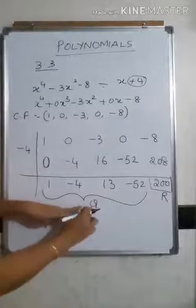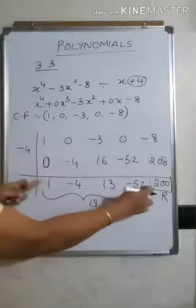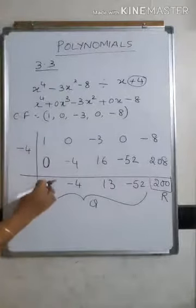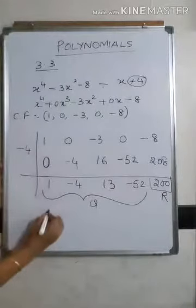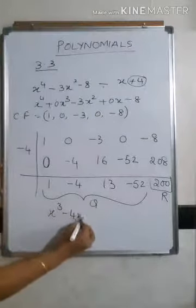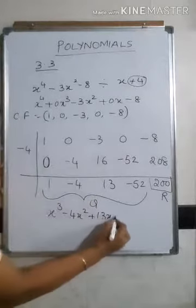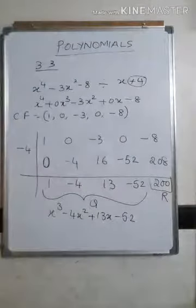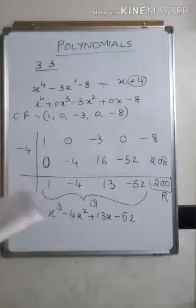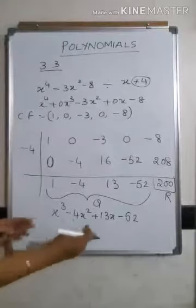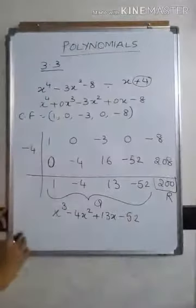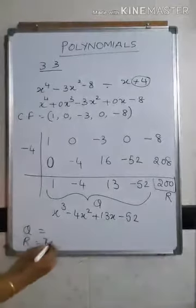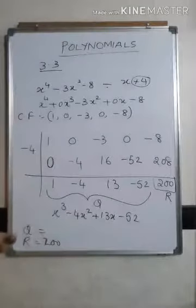The quotient is in coefficient form, so write it in index form. You have four terms, and 4 minus 1 gives degree 3, so start with x cubed. The quotient is x³ minus 4x² plus 13x minus 52, and the remainder is 200. You write the final answer expressing the dividend as divisor times quotient plus remainder. This completes the first synthetic division example.